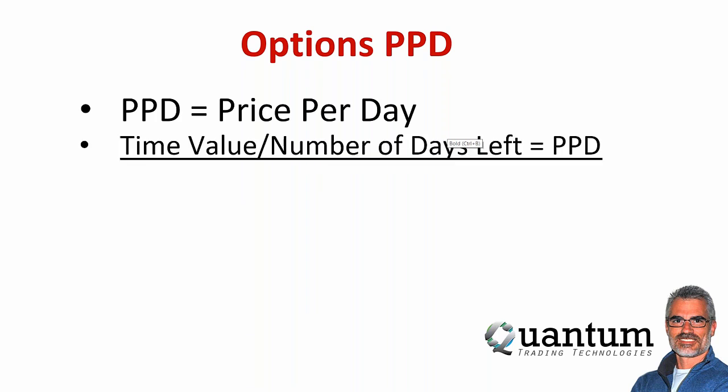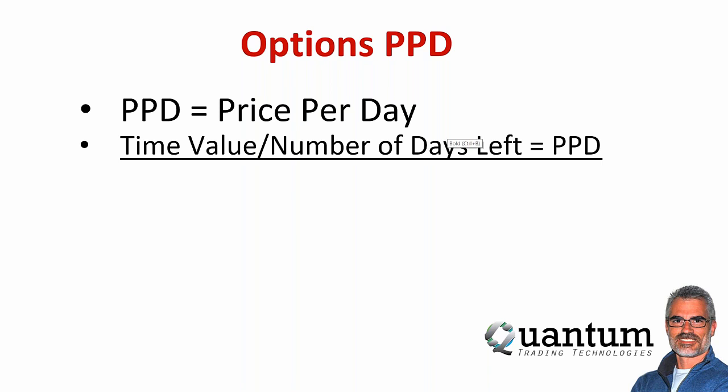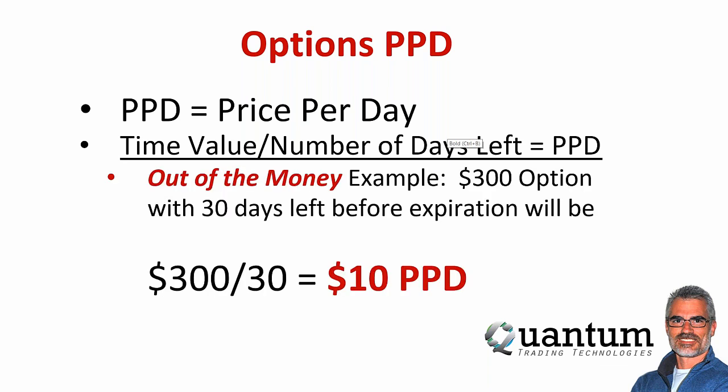I want to introduce PPD — Price Per Day. The price per day is simply the time value of an option divided by the number of days left on that option. That is the PPD. Most third graders can figure this math out — you don't need to figure out the Greeks. Time value divided by number of days left equals PPD. Part of the reason I had to find the simplicity of it is because I'm not very good at math — so I'm not making fun of anyone who isn't either.